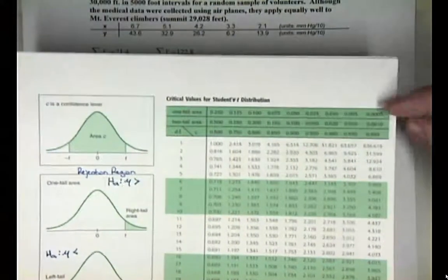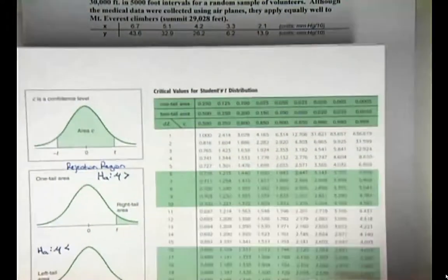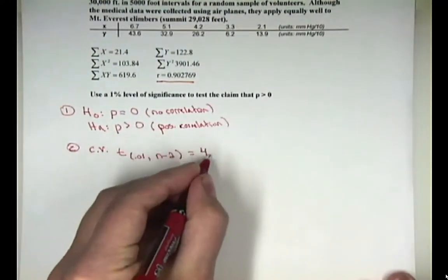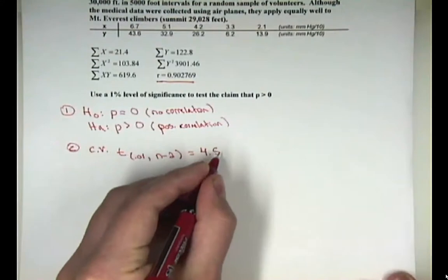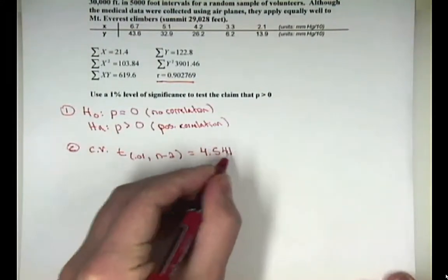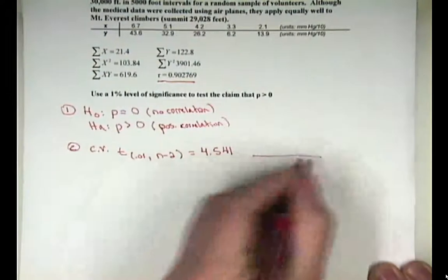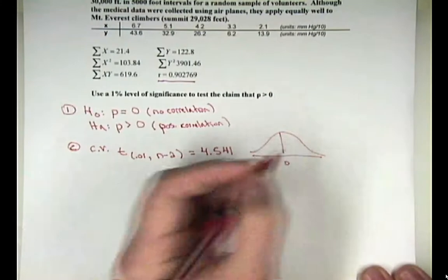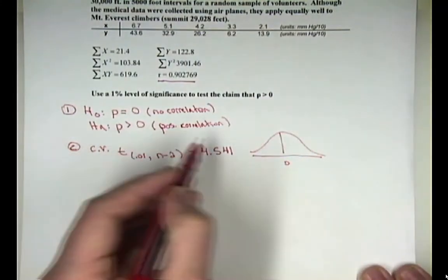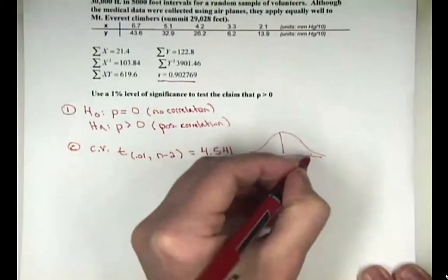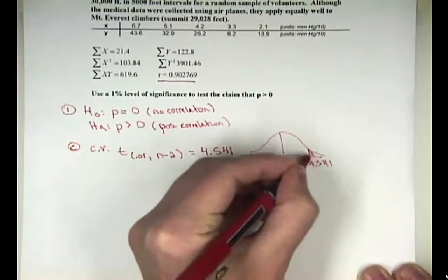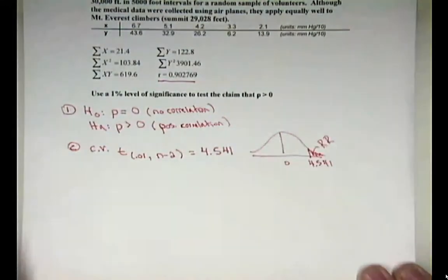So again, you would get your t-table. This is a one-tailed test. And you look up your degrees of freedom, which is, again, three. You should be seeing a t critical value of 4.541. Draw the picture if you like. Some people save the picture for the next step, but it doesn't really matter. This was a positive test. So it's a positive critical value. So it's a right-tailed test. Just shade your rejection region. There we go.